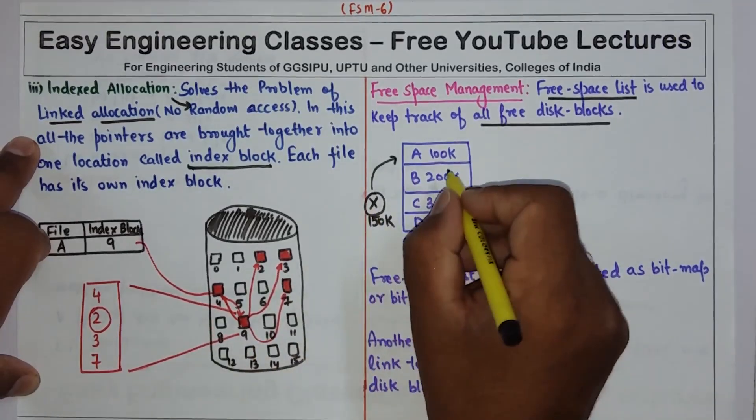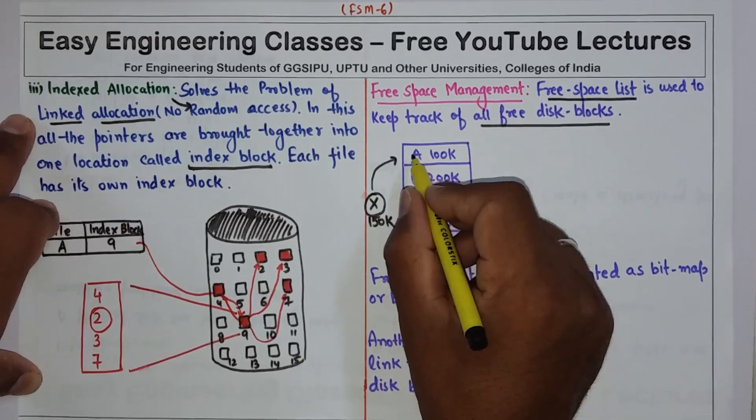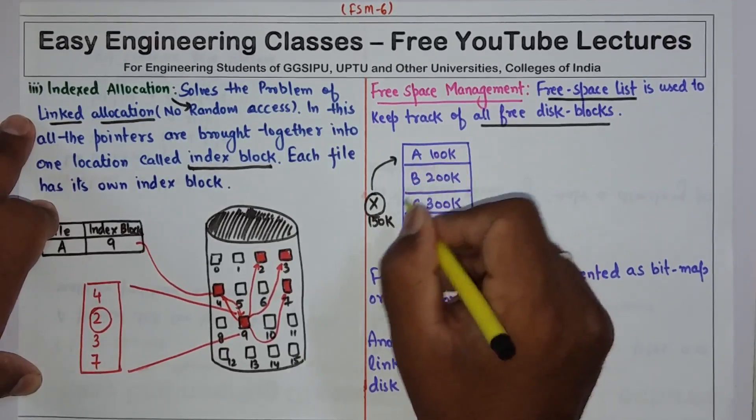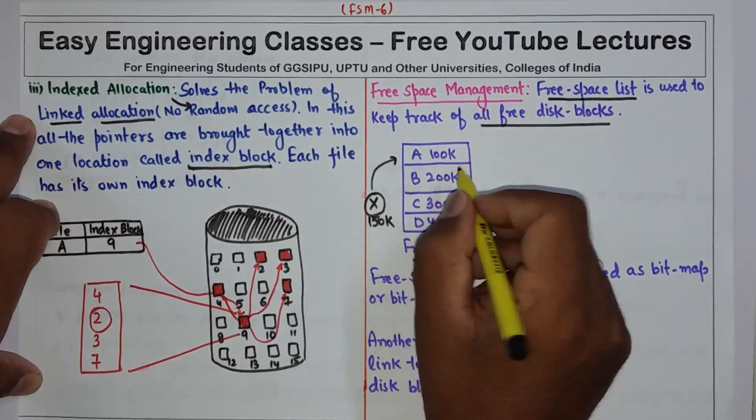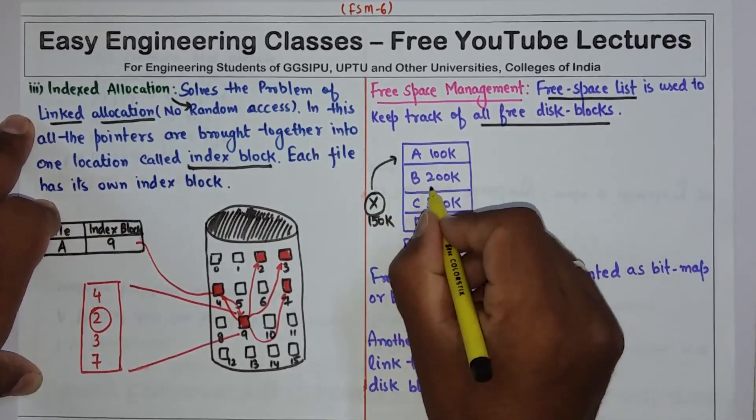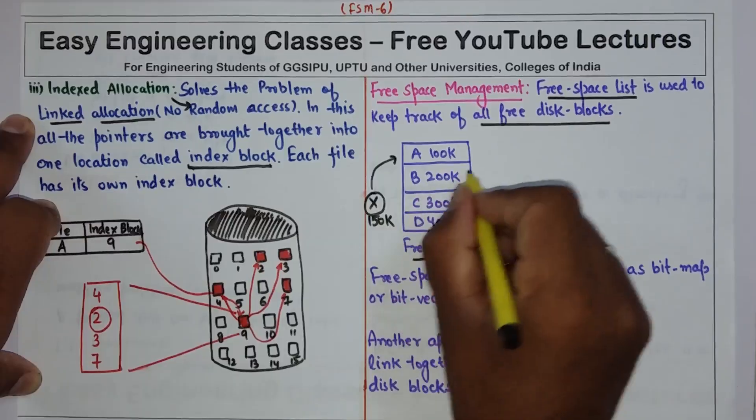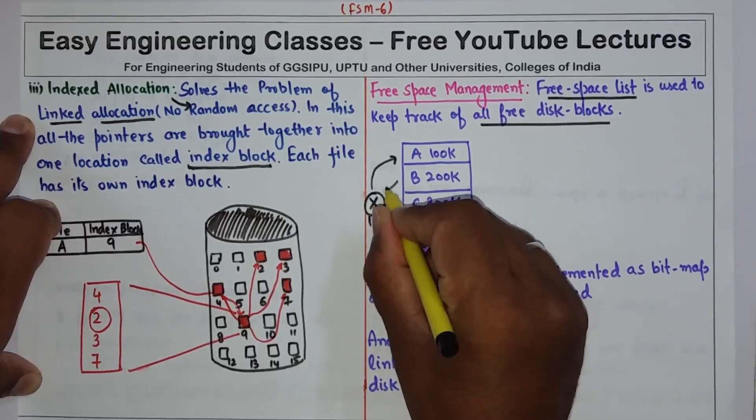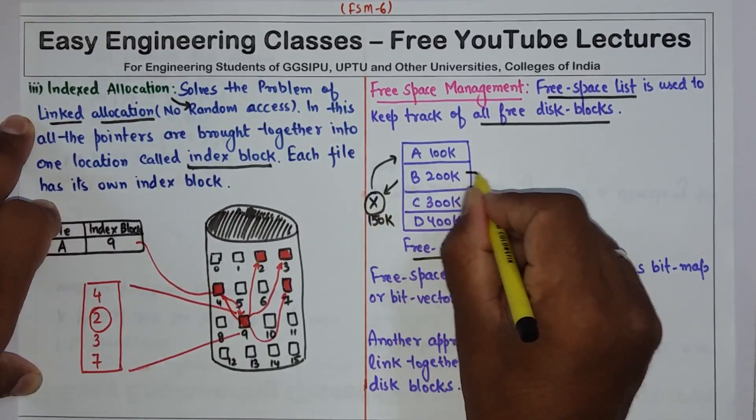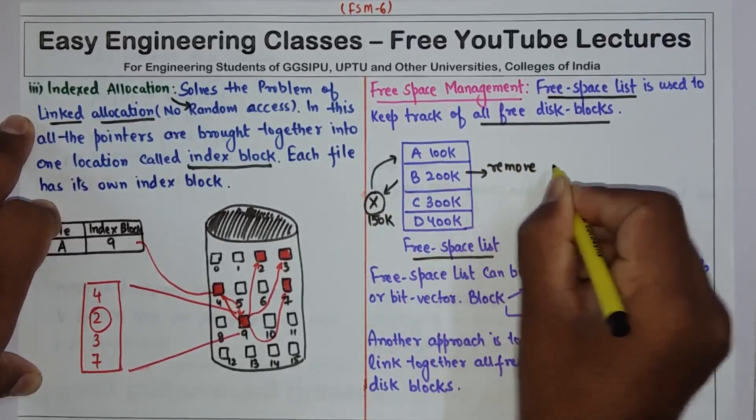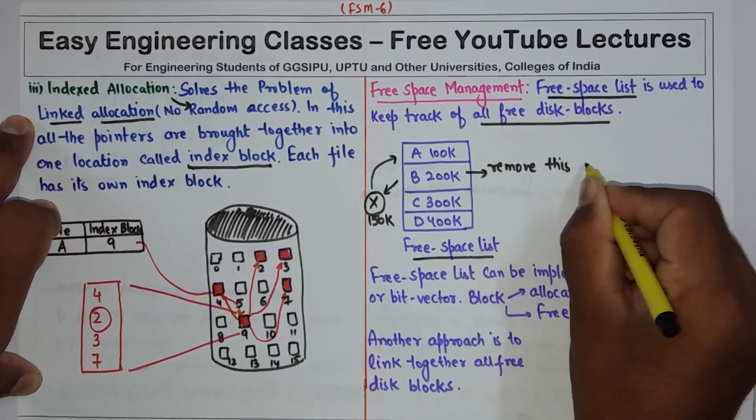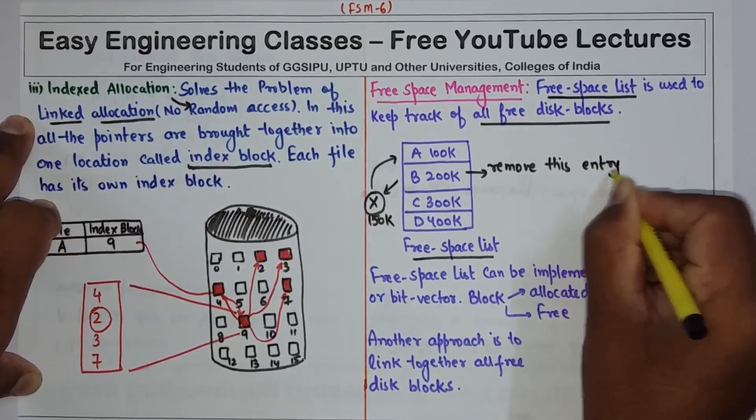So let's say A is 100k, this is smaller than 150k, so it cannot be allocated. Then we have B, this is 200k, so we will allocate this B to this X and remove this entry after allocation.